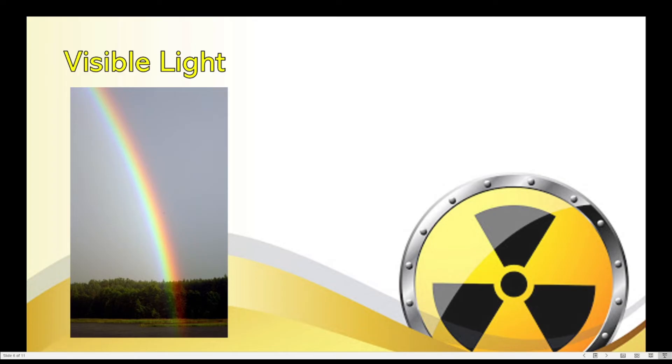Okay. So the rainbow is just a proof that white light or visible light can be separated into component colors because a rainbow is brought about by white light passing through a prism. So this time, the prism is water droplets.